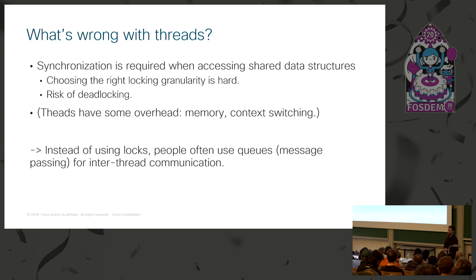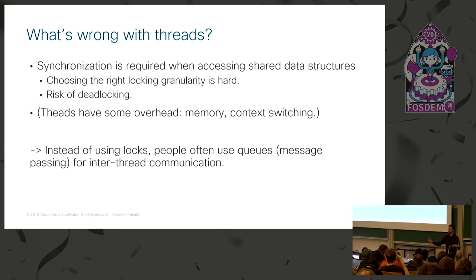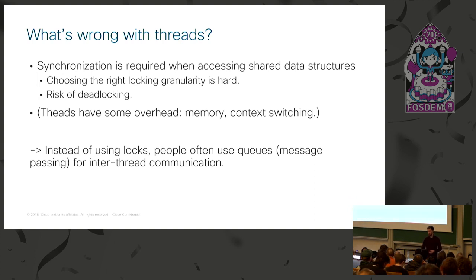It's also worth mentioning that instead of using shared data structures, you can use message passing — threads can communicate over a queue. If one thread has to pass data to another, you send it over the queue and serialize it. That's a way to avoid locks and prevent these issues, but it's also a whole different way of programming.